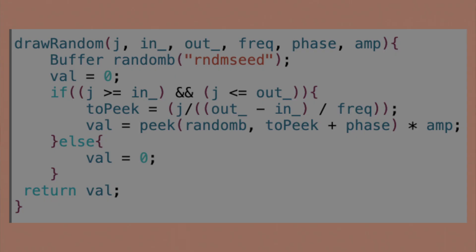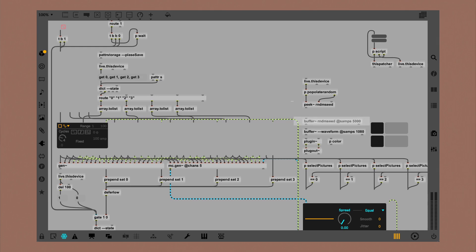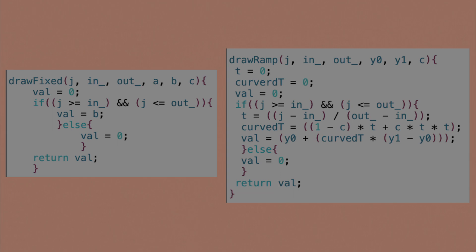Skipping all the draw functions related to the LFO shapes, let's take a look at the drawRandom one. To be able to have random values, I basically read those values from a buffer. By picking the values from a buffer that contains random values and having this buffer outside my gen patcher, I ensure that I can retrieve those values by using the same seed every time, and also I don't have to keep an internal memory of the random values. The drawRamp and drawFix functions are pretty much straightforward.